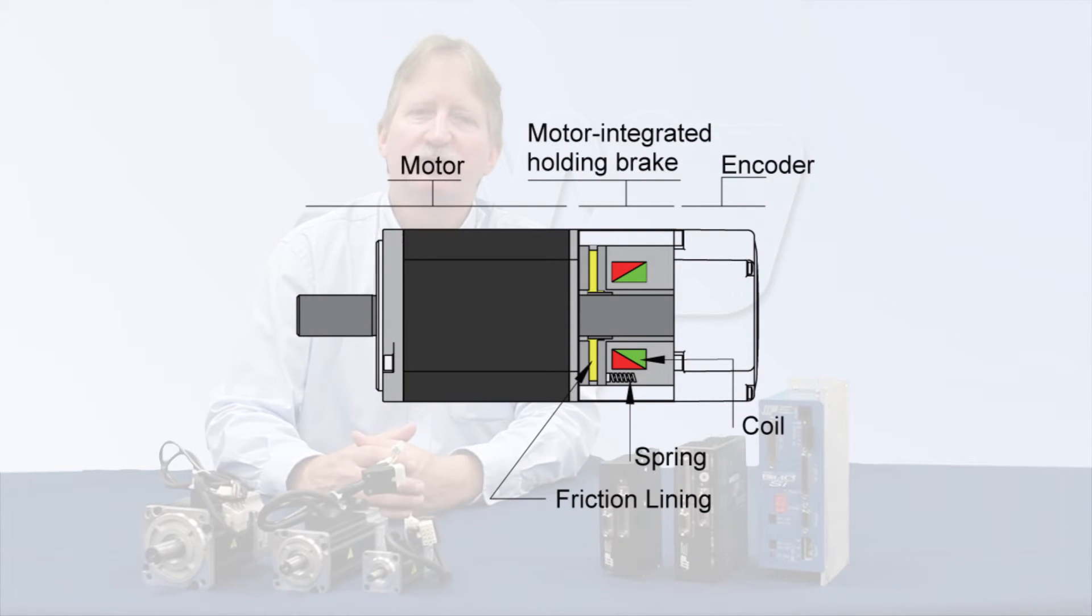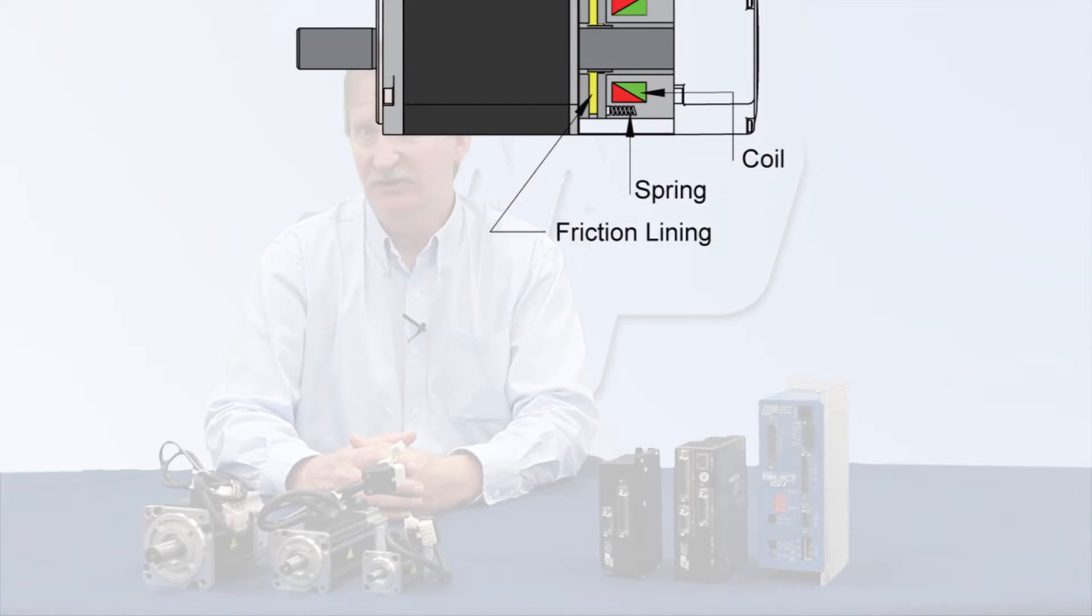A 10,000 count per revolution encoder provides position and velocity feedback. All models are available with a fail-safe brake option, so your load doesn't drop to the ground when power is removed from the motor. And our drives include an automatic feature to help manage that brake.